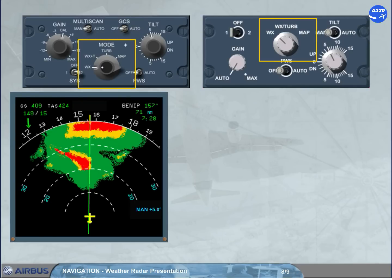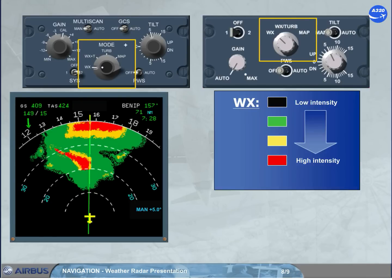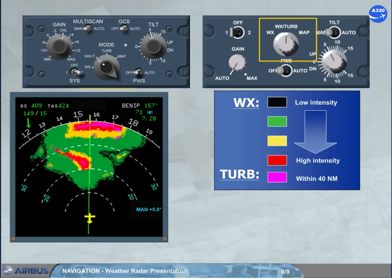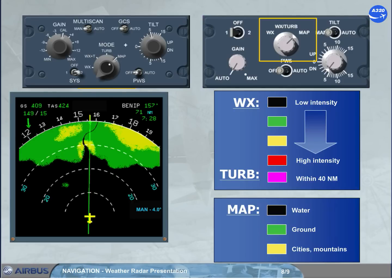The mode selector: when it is in WX position, shows the intensity of precipitation. In WX turb or WX plus T position, shows the intensity of precipitation plus the turbulence areas in magenta. In map position, the radar operates in ground mapping mode. On the version shown on the left-hand side, a turb position allows the display of only the turbulence areas.